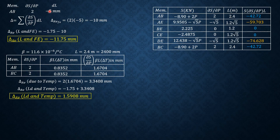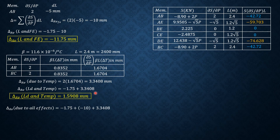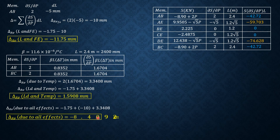For the combined effects of all sources: load contribution = −1.75mm, fabrication error = −10mm, temperature increase = +3.3408mm. The net vertical deflection at A due to all sources is −1.75 + (−10) + 3.3408 = −8.4092mm.